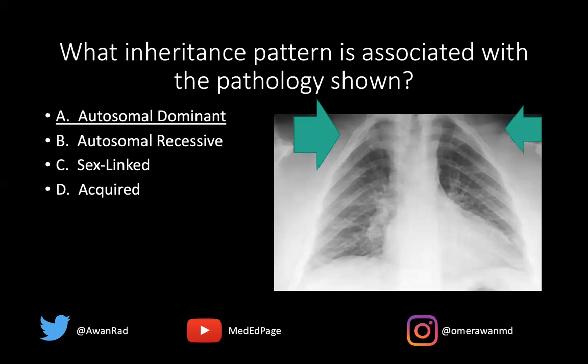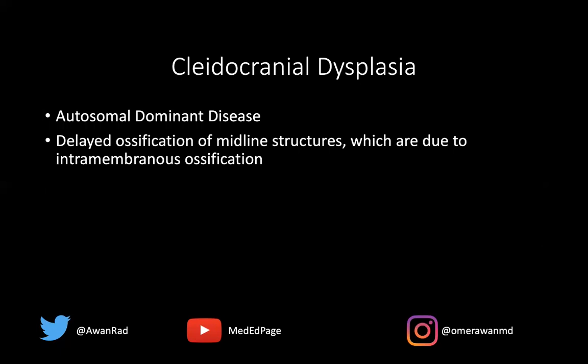Sometimes it's hard to recognize something that should be there that's not there. That can often be very problematic when we're talking about identifying pathology. This is a really nice case of cleidocranial dysplasia — again, it's an autosomal dominant disease. This represents delayed ossification of midline structures; the clavicle is a midline structure, often due to intramembranous ossification.